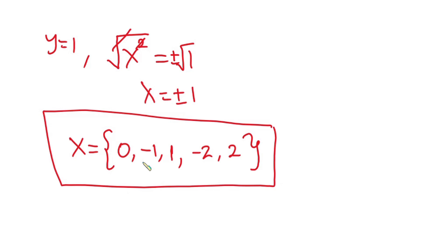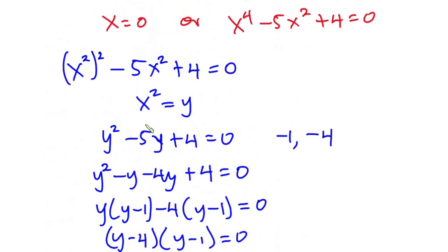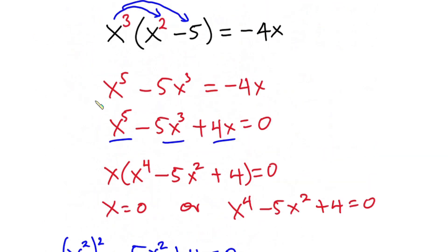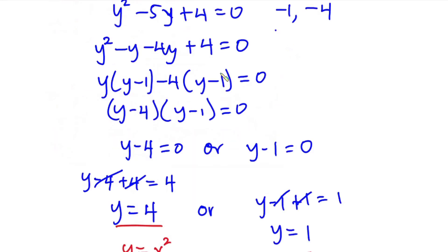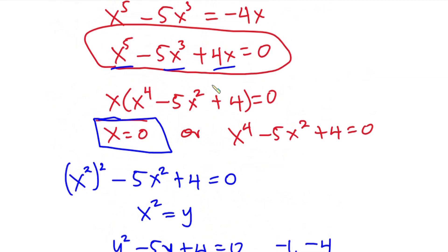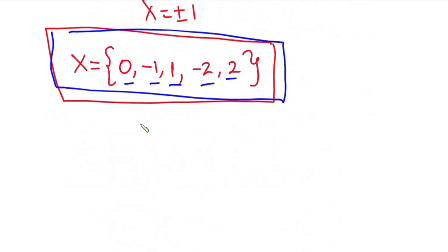When you substitute any of these values into the equation, you'll get zero. Now, as I mentioned, there are two ways to factorize this trinomial: x to the fourth power minus 5x squared plus 4 equals zero. Let's look at the second method, which uses a table.